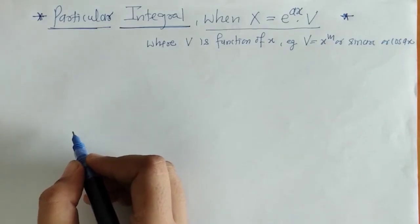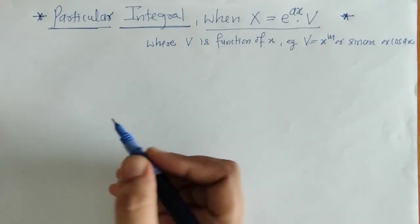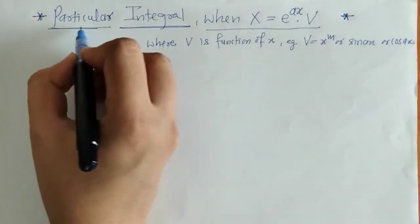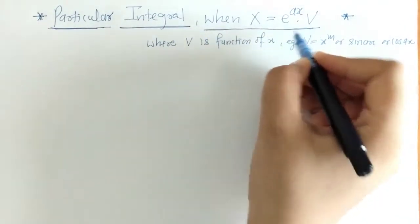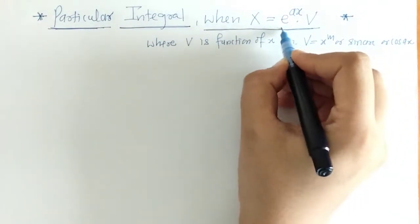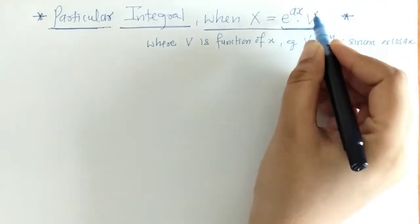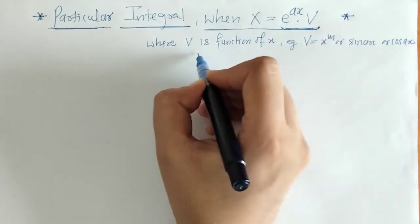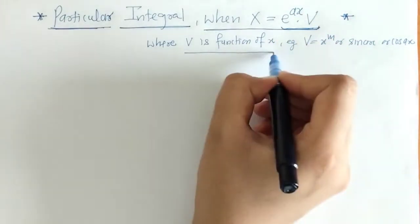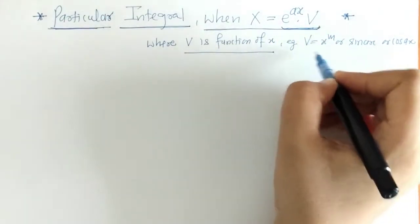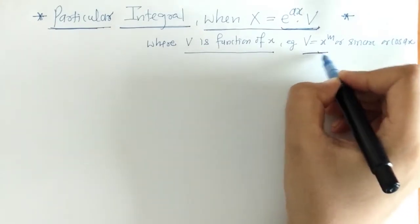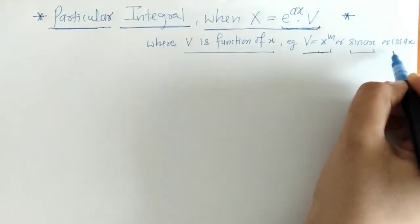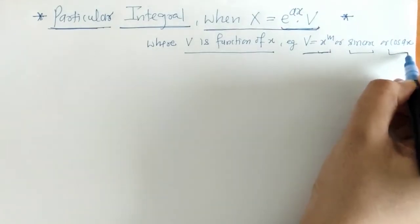Hello everyone, welcome to Unlock Maths. Today we are going to discuss the Particular Integral when we have x equals e raised to ax into v, where v is a function of x and v may be x raised to m, or sine of ax, or cos of ax.